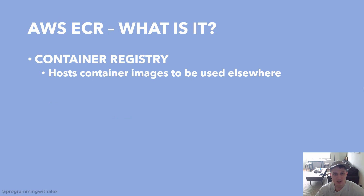Amazon ECR, Elastic Container Registry, is exactly what it sounds like — it's a container registry. It hosts the Docker image for our Lambda function so we can pull it in and use it in Lambda.